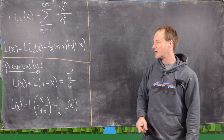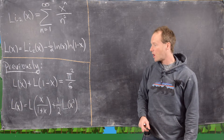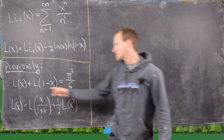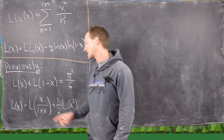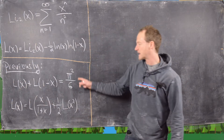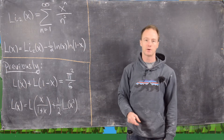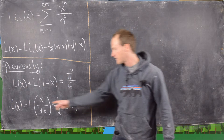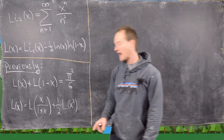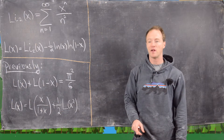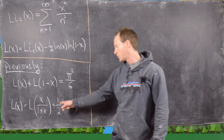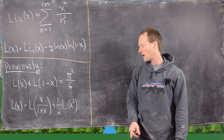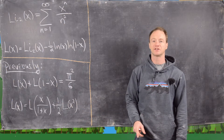We also derived these two identities. We have L of x plus L of 1 minus x equals pi squared over 6. And then L of x equals L of x over 1 plus x plus one half L of x squared.